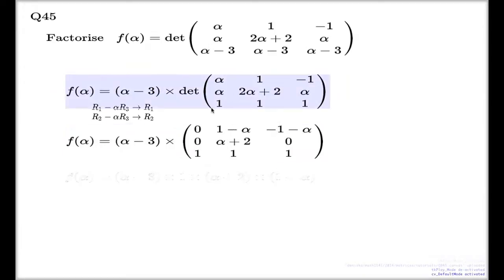All right, so if I scale this by lambda and subtract from the second row, one of lambdas will go, one of lambdas will go, so it's zero here. And here will be zero, one take lambda, negative one take lambda.